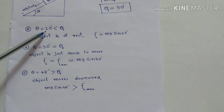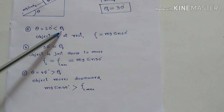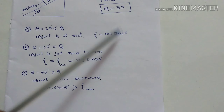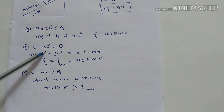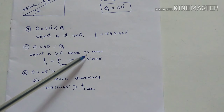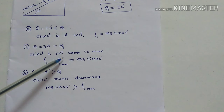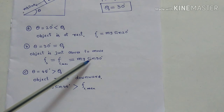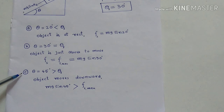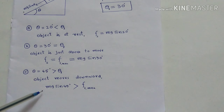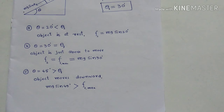Question A: theta is equal to 20 degrees, which is less than theta L, so the object is at rest. The force of static friction Fs is equal to mg sin 20. Question B: theta is equal to 30 degrees, equal to theta L — the object is just able to move but still at rest, so Fs becomes maximum, equal to mg sin 30. Question C: theta is equal to 45 degrees, which is more than theta L, so the object moves downward — mg sin 45 is greater than Fs maximum.